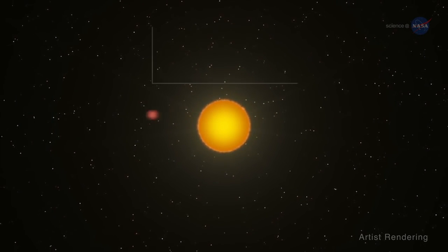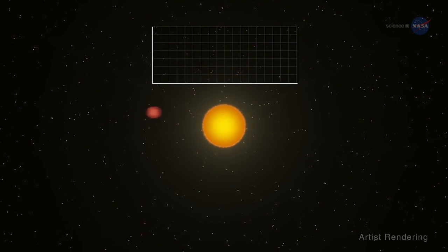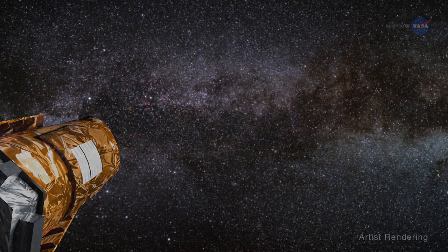Kepler routinely surveys thousands of stars, looking for slight variations in brightness that signal the transit of a planet across the stellar surface. For each star in the survey, Kepler collects a long-term record of the star's brightness, a record that can be used for astro-seismology.